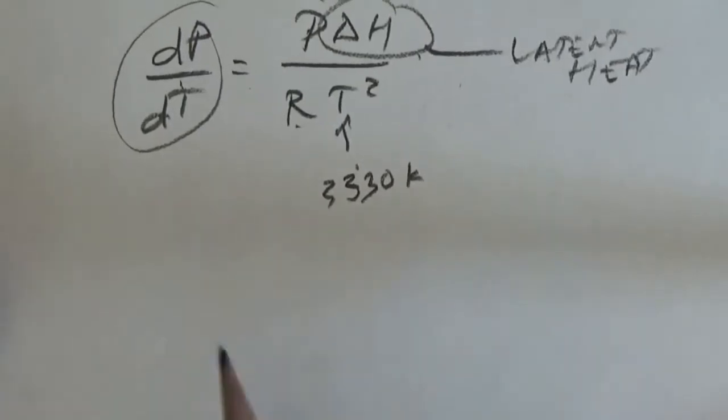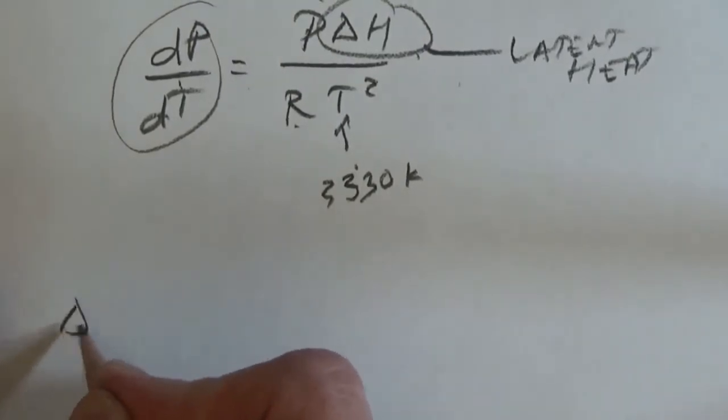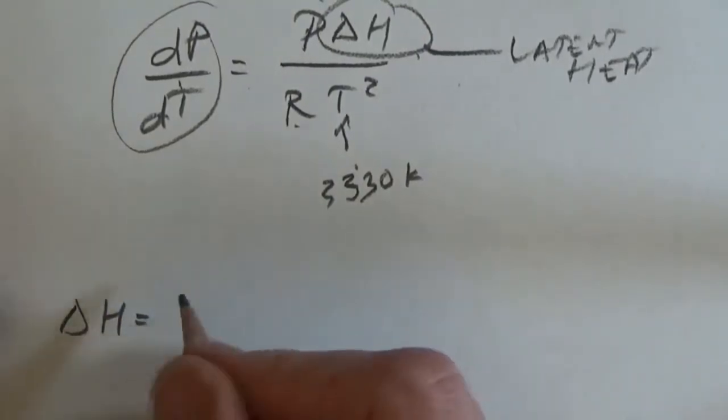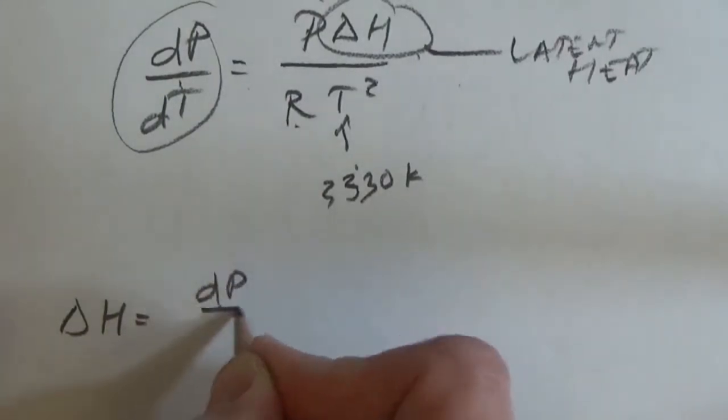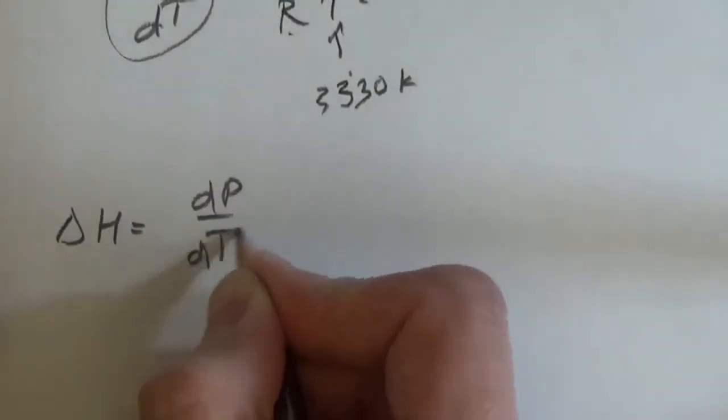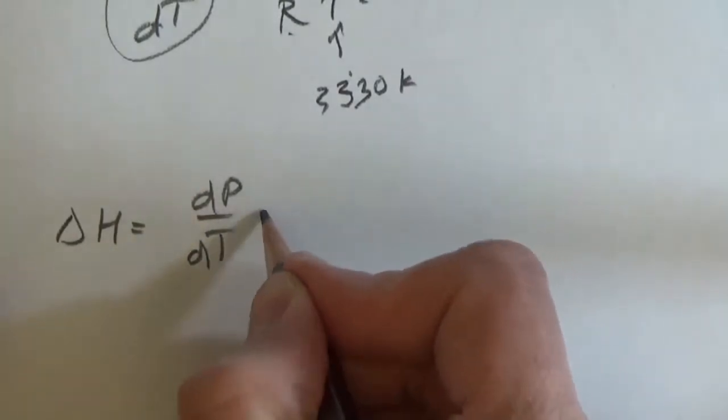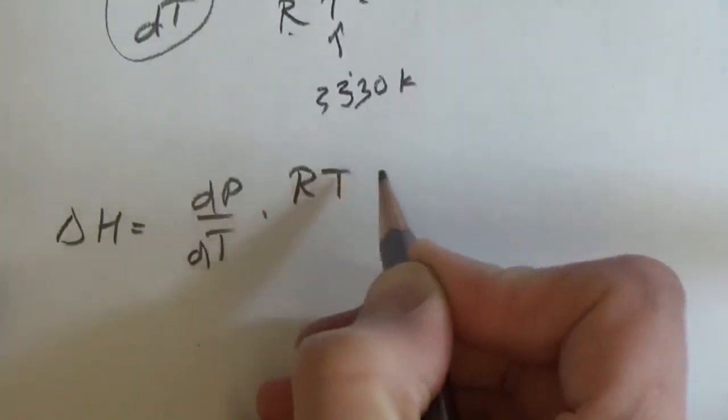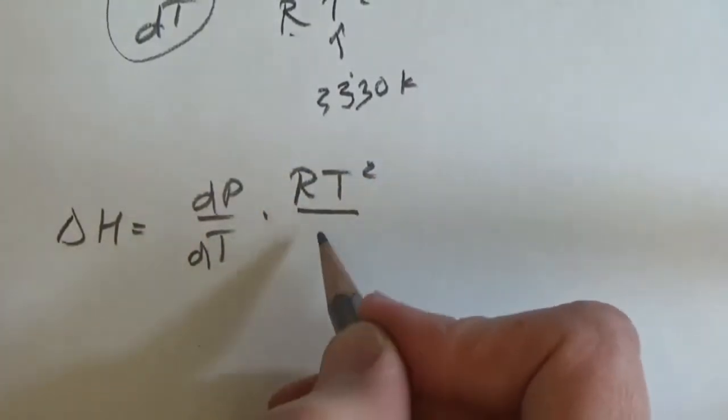So we're solving: delta H is equal to dp by dt times R T squared over p.